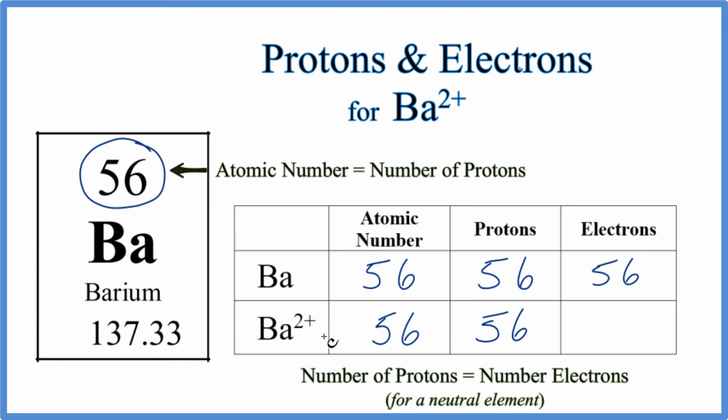For the Ba2+, this 2+ means that we've lost two negative charges. Electrons, they're the negative charges. So when we lose two negative charges, we get a 2 plus here. So 56 minus 2, 54 total electrons for the Ba2+ ion.